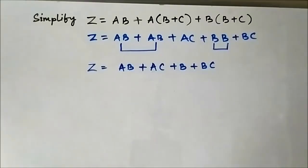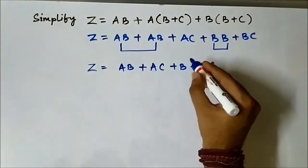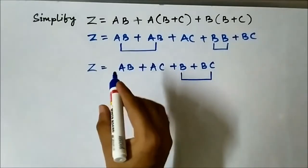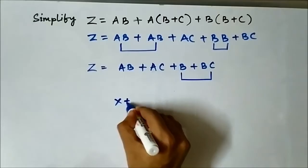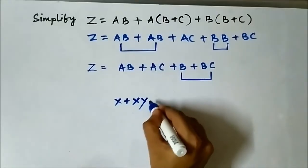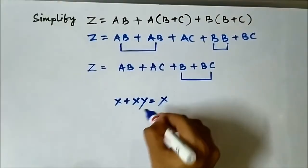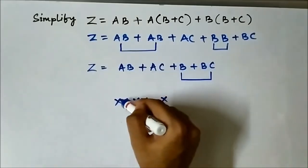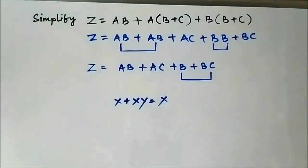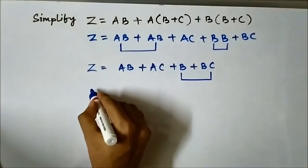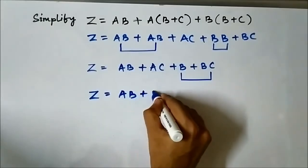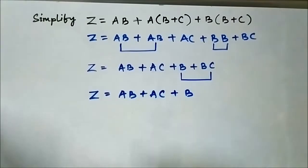Now we will apply the absorption rule. The absorption rule states: for Boolean variables x and y, x plus xy equals x. Identifying the pattern here — b plus bc — where x is b and y is c. I have already discussed these rules in previous videos, so please watch those. Applying this, we can write it as ab plus ac plus b.